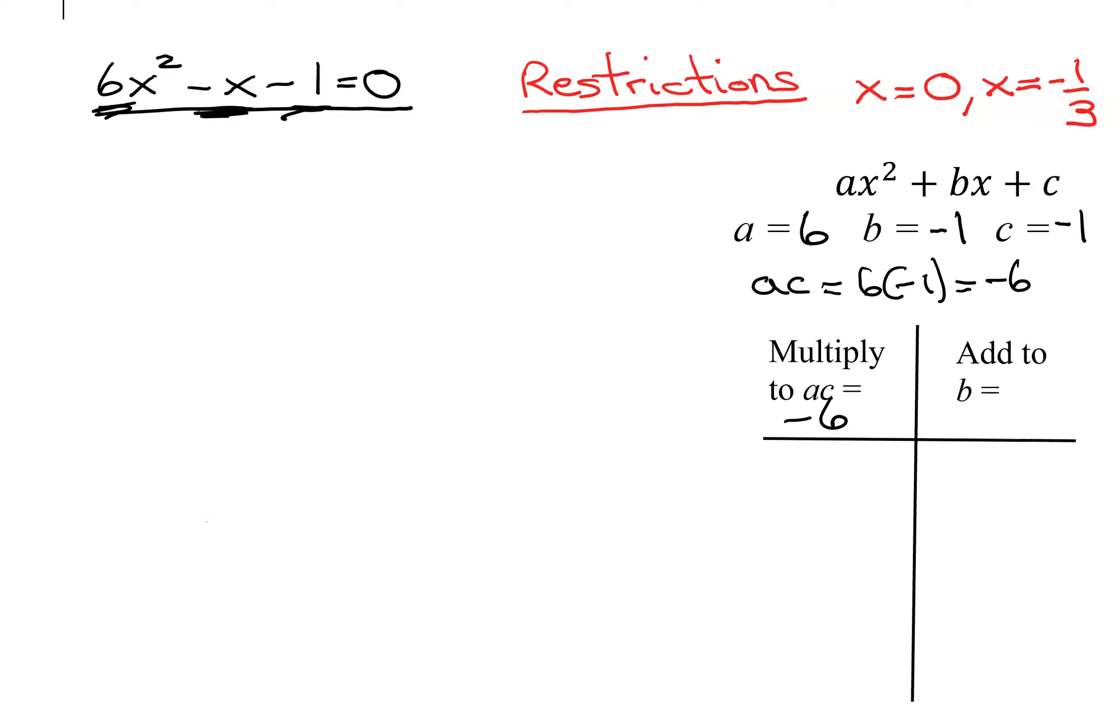So I need two numbers that multiply to negative 6 and add to b, which is negative 1. Multiply to a negative means the signs of the two numbers are the opposite. And the bigger one has to be the negative. So I'm going to start with negative 6 times 1, which definitely multiplies to negative 6. But negative 6 plus 1 definitely doesn't equal negative 1. So does 2 divide into 6? Yes, 3 times. So I need negative 3 times 2.